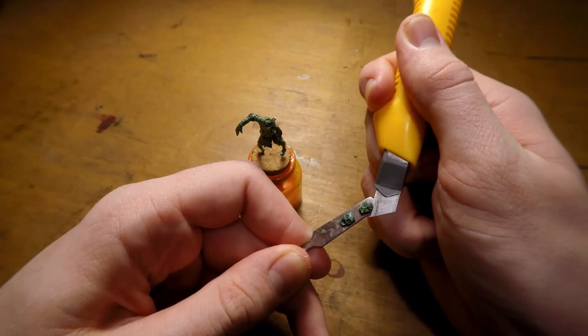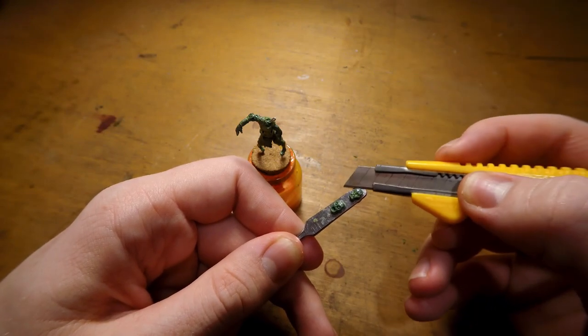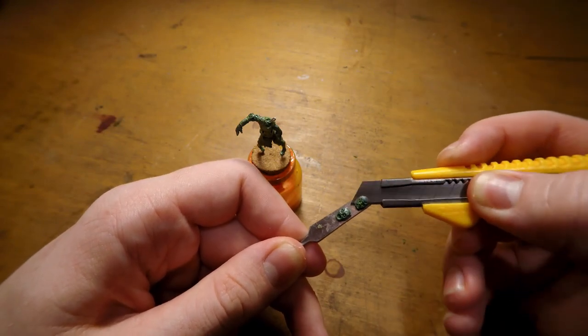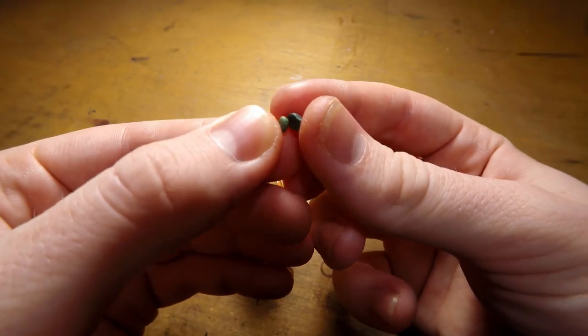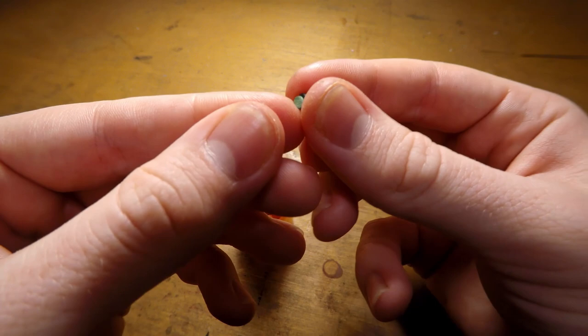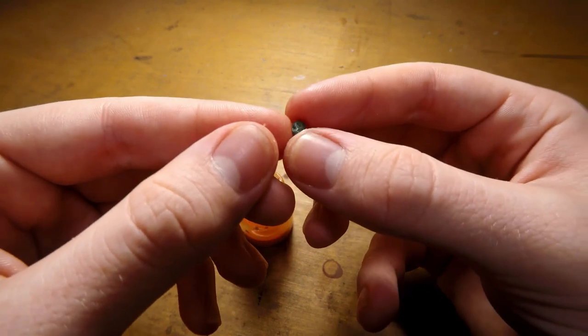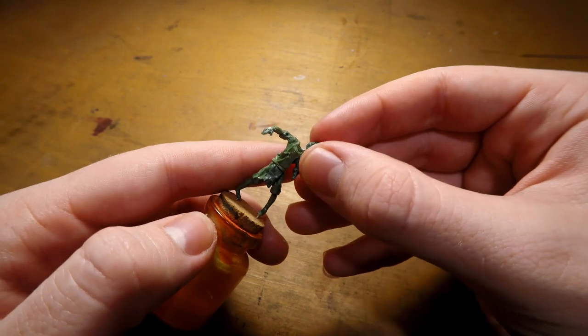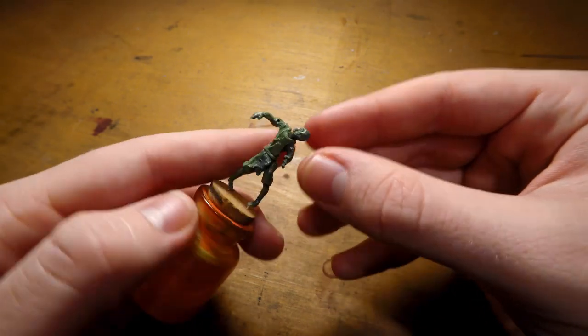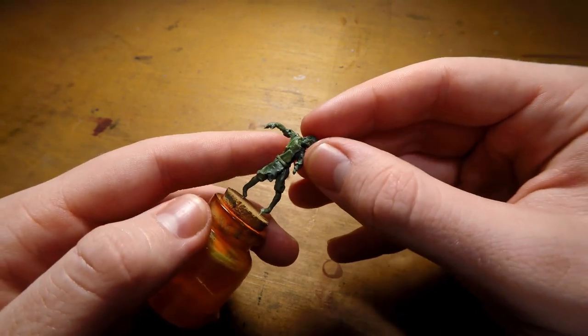I then remove the face from the sculpting tool I was working on it on. Being careful not to cut myself. And add a little bit of green stuff to the back of it. And attach it to the little piece of wire that's been sticking out where the neck should be. I add more green stuff as needed to make the neck and stuff like that.